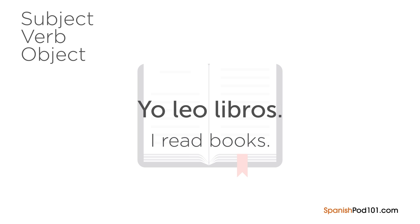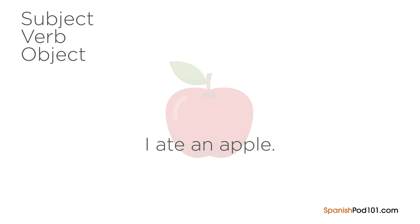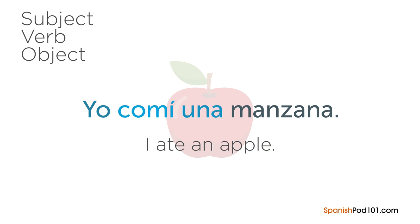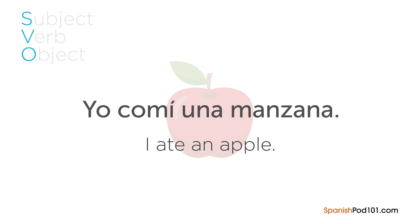This means you can essentially swap out English words for Spanish words to convert a sentence to Spanish. So imagine you wanted to say 'I ate an apple' in Spanish — just swap the words: 'I' is 'yo,' 'ate' is 'comí,' 'an' is 'una,' and 'apple' is 'manzana.' Altogether: 'Yo comí una manzana.' You can form nearly all basic sentences in Spanish just by following the SVO word order.